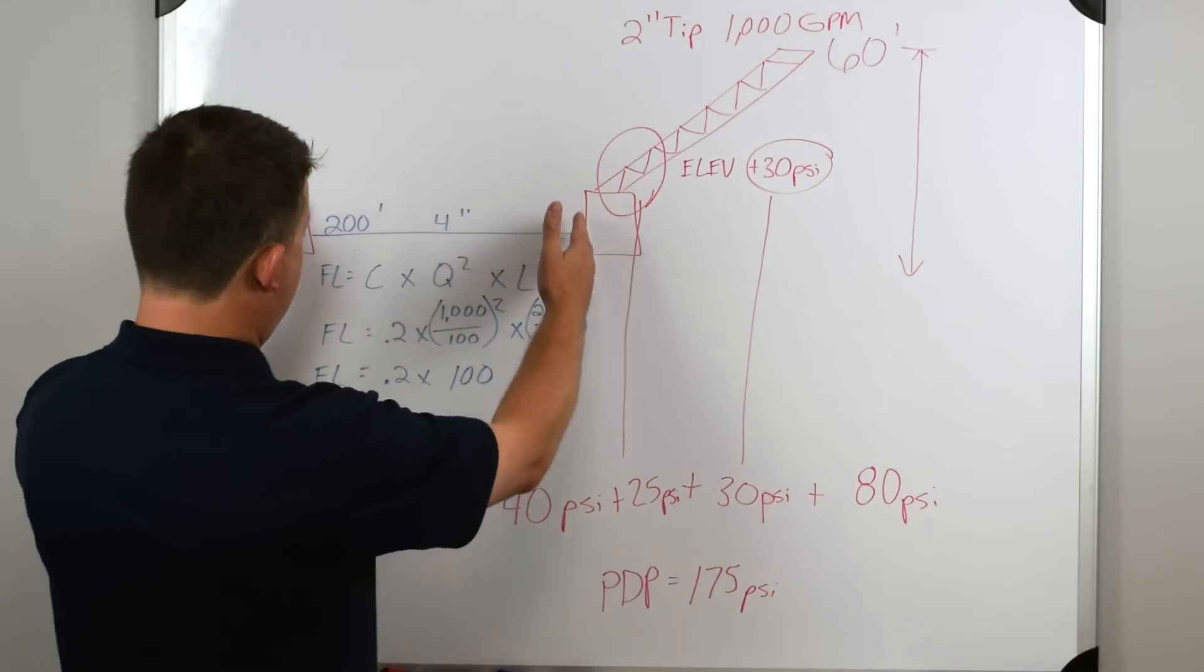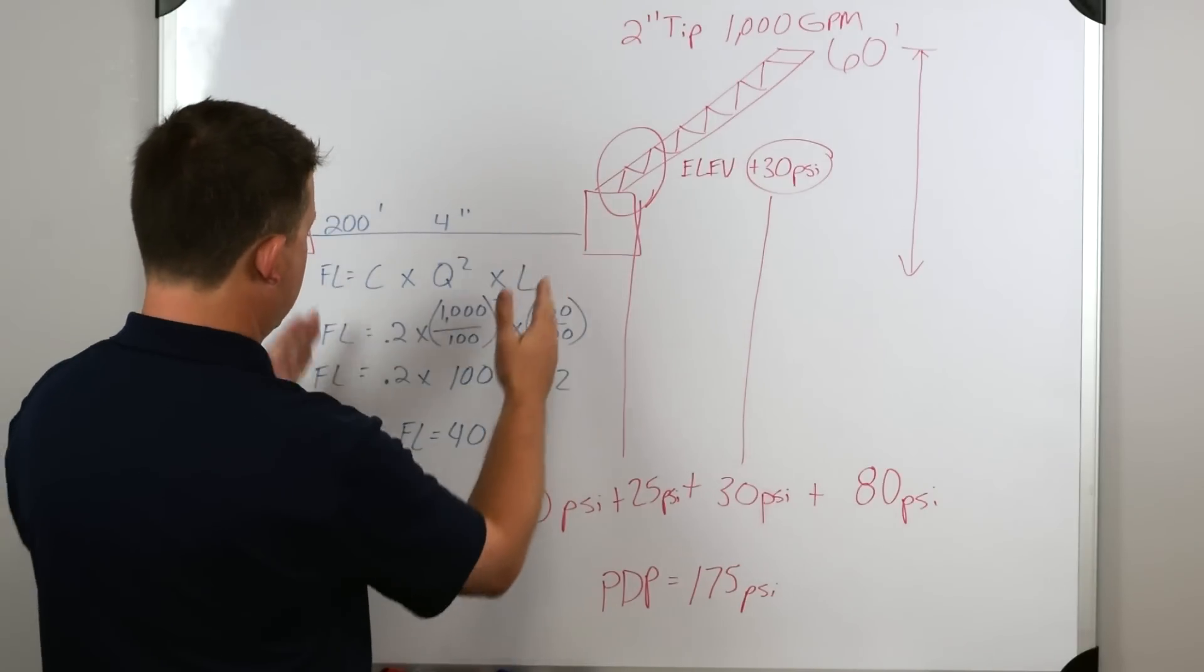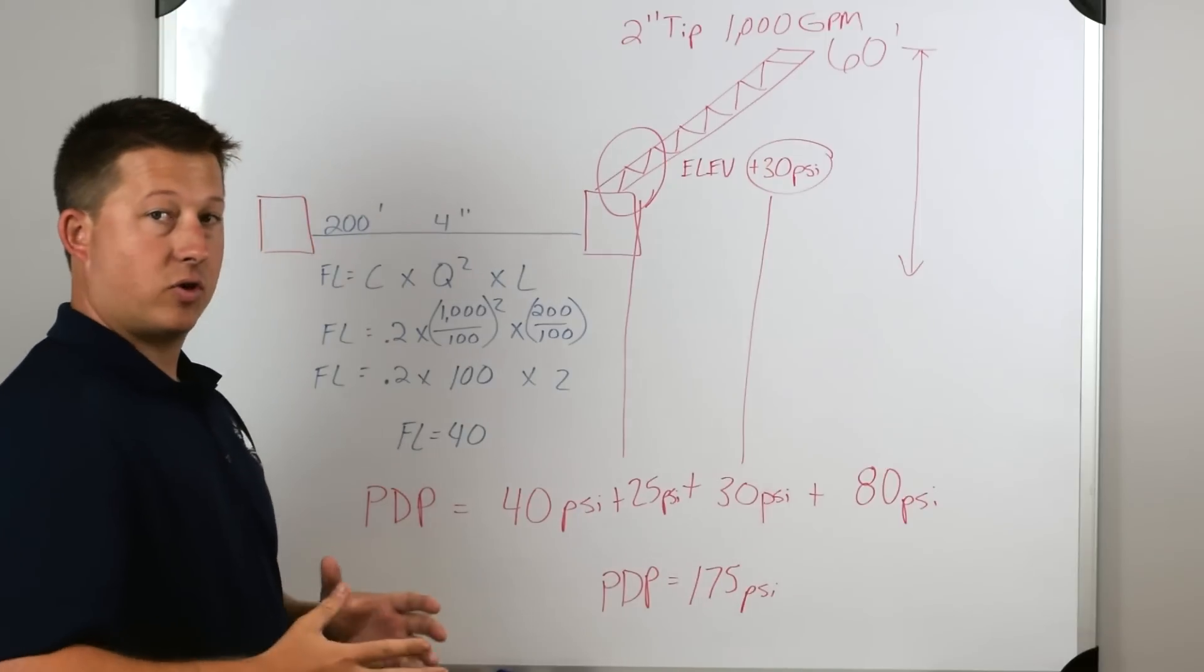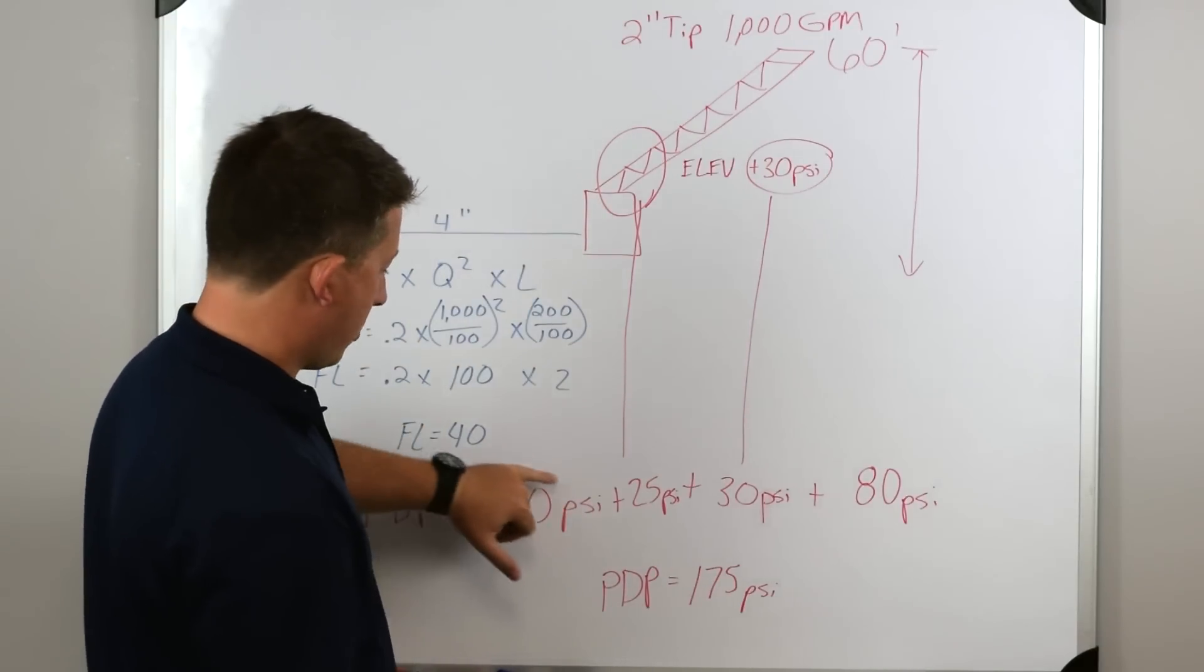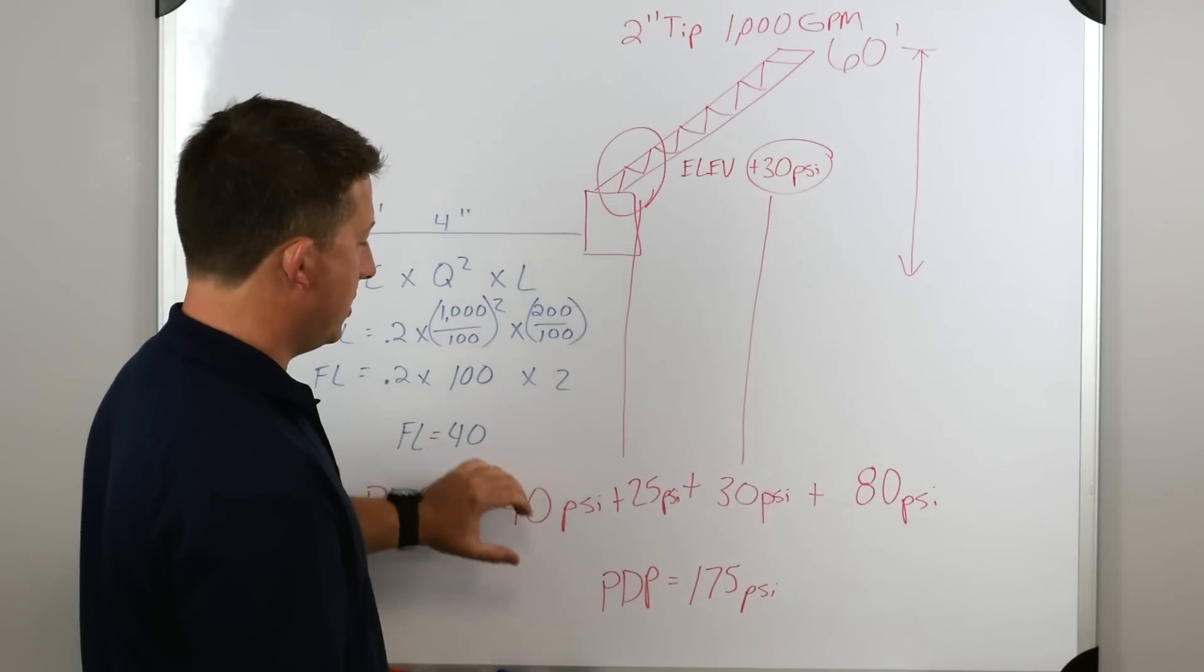So we know that within this hose from this truck to the aerial is going to be a 40 PSI friction loss. That's one piece that we need to know. We keep working left to right. I wrote this down here. 40 PSI goes with this.